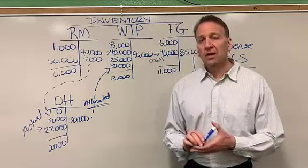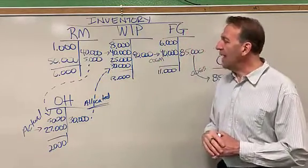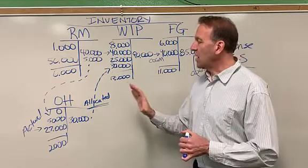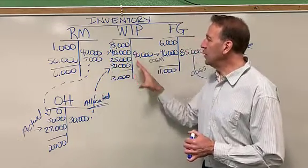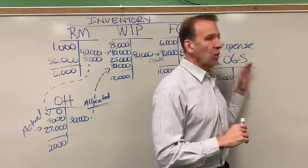So there are ending account balances, and this is how costs move through inventory and eventually get sold.